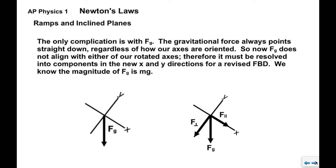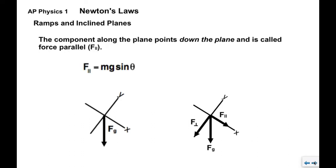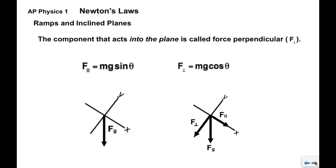These components will have particular names. We're going to call them F parallel, that's the x-component that acts along the ramp itself, and F perpendicular which acts into the ramp and inward. So now the component along the plane, F parallel, points down the plane and is equal to MG sine theta. F perpendicular points into the ramp and its formula is MG times cosine theta.